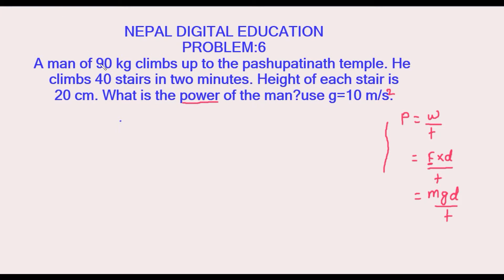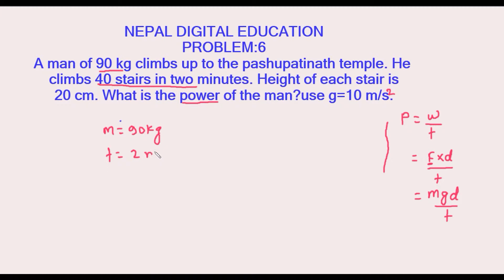In this problem, mass is given as 90 kg. He climbed 40 stairs in two minutes, so time is two minutes. The total number of stairs is 40, and the height of each stair is 20 centimeters.